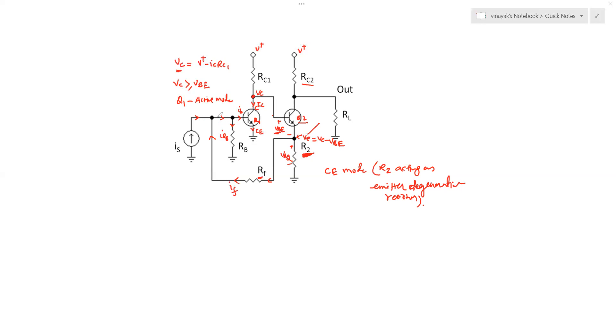This current is getting summed at this node with the input current IS. So this current here is IS plus IF and then that current also getting split between the two parts IRB and IB. So there is this negative feedback that is being used. Now you have to tell me as an exercise what is this feedback: shunt-shunt, series-series, series-shunt or shunt-series. There are four types of feedback and this is a feedback amplifier.